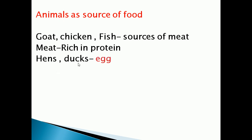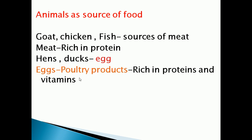From hens and ducks we will get eggs. Eggs are called poultry products. These eggs are rich in proteins and vitamins. We must have eggs in our daily diet. Why do we have to take eggs in our daily diet? Because they have protein and vitamins.